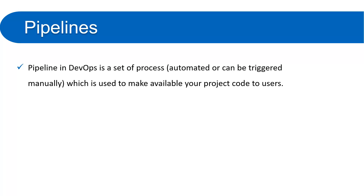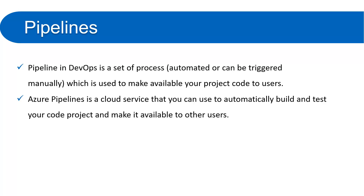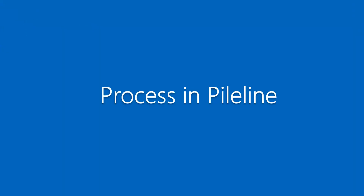In another definition, Azure Pipelines is a cloud service that you can use to automatically build and test your code project and make it available to other users. If there is any problem, you will get a notification about the specific line or file with the issue so you can resolve it before publishing to a server. Azure Pipelines is also used for unit testing, and publishing your code to a particular server.